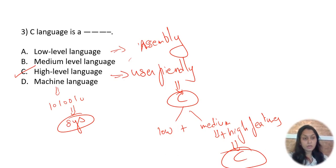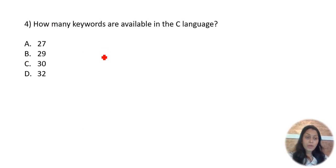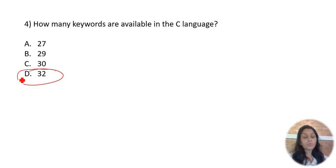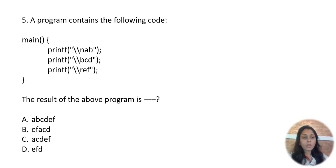How many keywords are available in the C language? Remember, the keywords present in C and supported by the C compiler total 32. Option D is the correct one — just remember the number 32 as the total number of keywords present in C language.